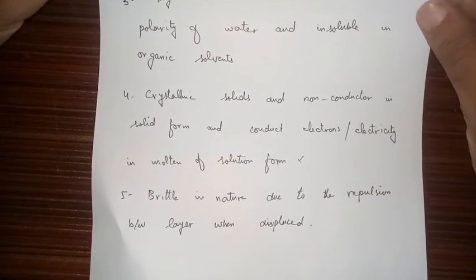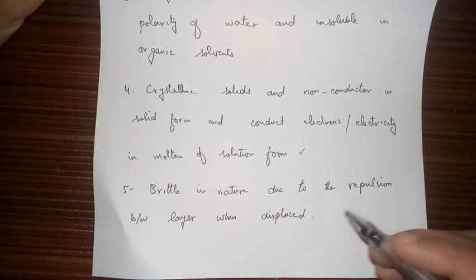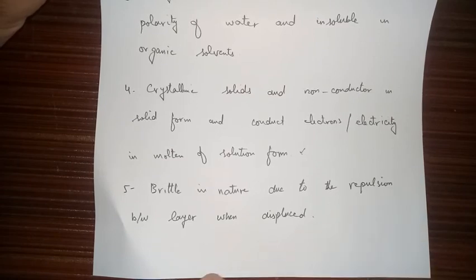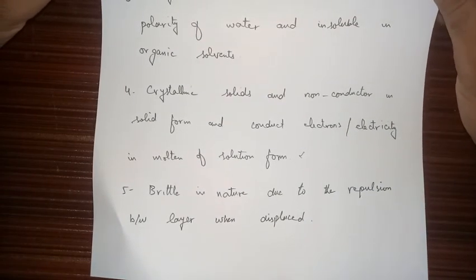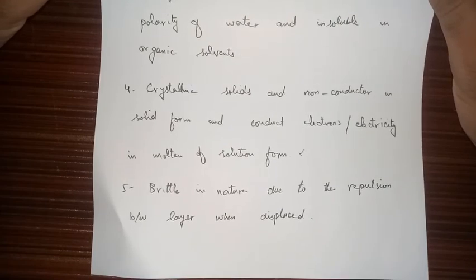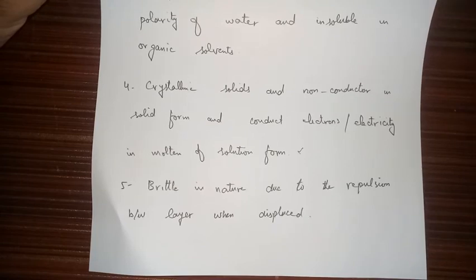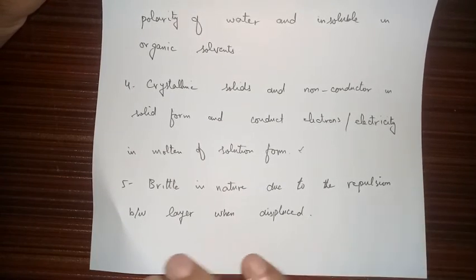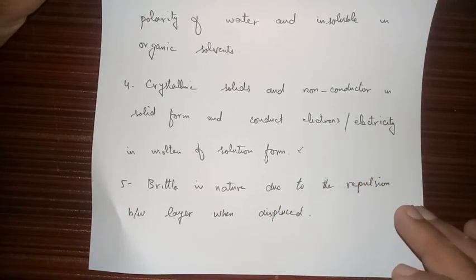Ionic compounds are brittle in nature due to repulsion between layers when displaced. When the layers of an ionic compound are displaced, the same-charged ions come opposite to each other and repel, causing the crystal to break. When pressure is applied, the ions dislocate from their positions and the crystal breaks down.